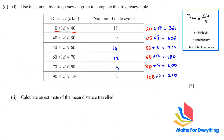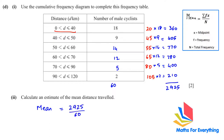Adding all f×x values gives a total of 2925, and the total frequency is 60. The estimated mean = 2925 / 60 = 48.75 kilometers.